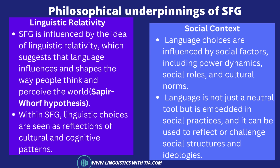The next philosophical underpinning is social context. Like linguistic relativity, SFG places strong emphasis on the social context of language use. It considers how language choices are influenced by social factors like power dynamics, social roles, and cultural norms. It takes the view that language is not just a neutral tool but is embedded in social practices and can be used to reflect or challenge social structures and ideologies. Thus, the philosophical underpinnings of SFG encompass functionalism, system theory, semiotics, linguistic relativity, and social context, seeking to uncover how language functions as a meaning-making system within human communication and cognition.